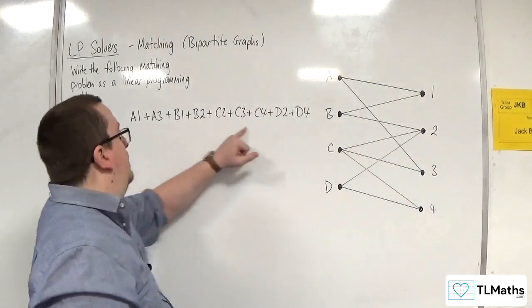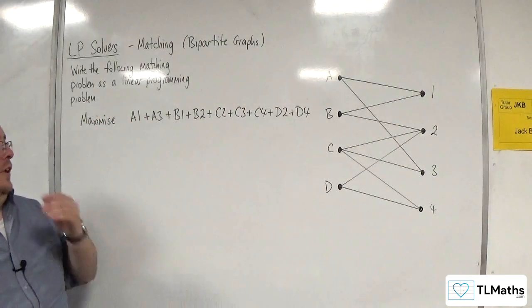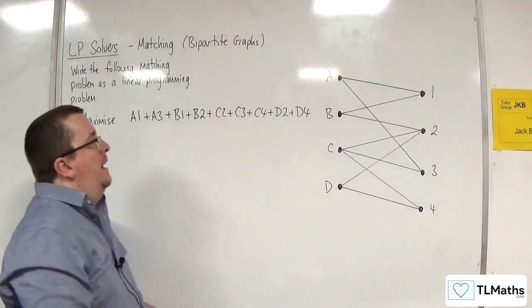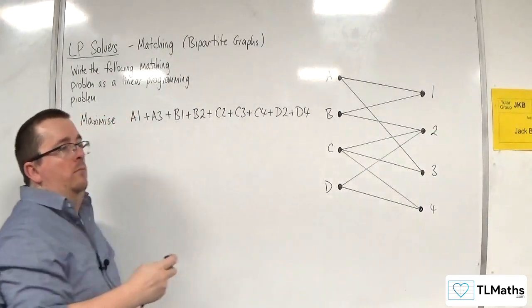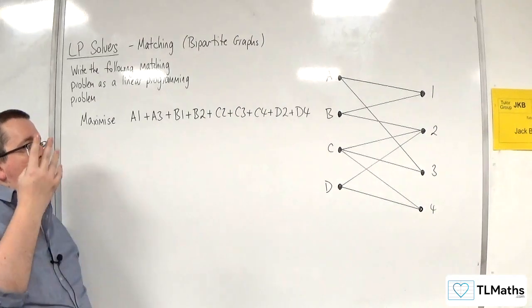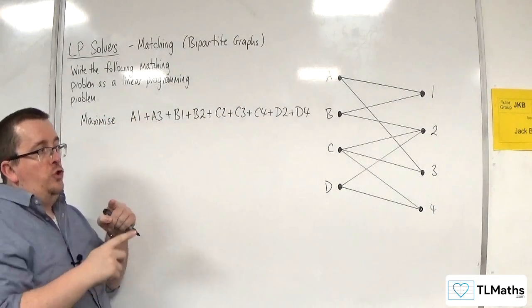Now, some of these will be 1s, some of these will be 0s. So essentially, and hopefully, I can find this being equal to 4, because I want each worker to be mapped to just one of the jobs.